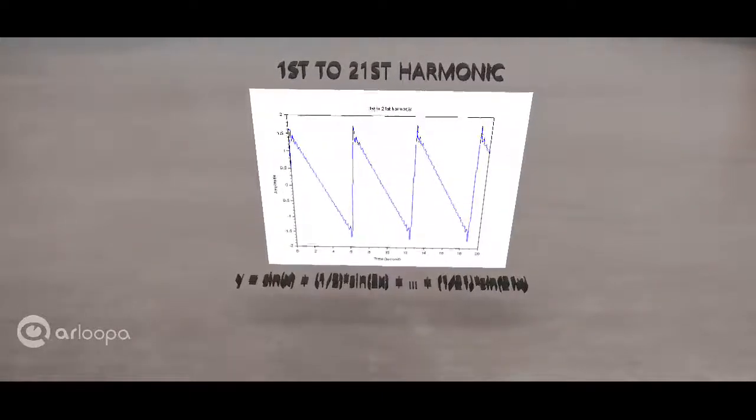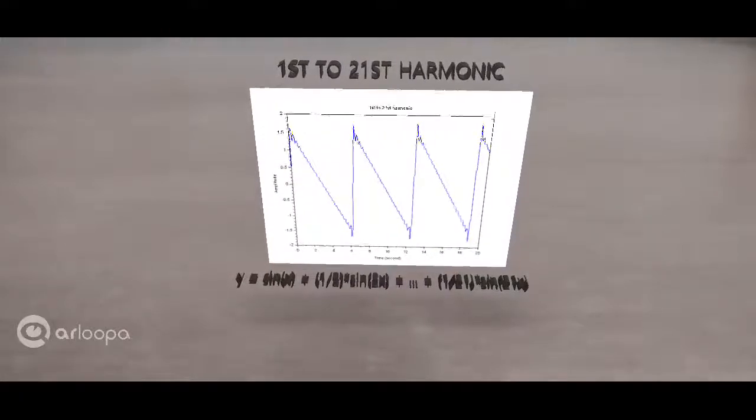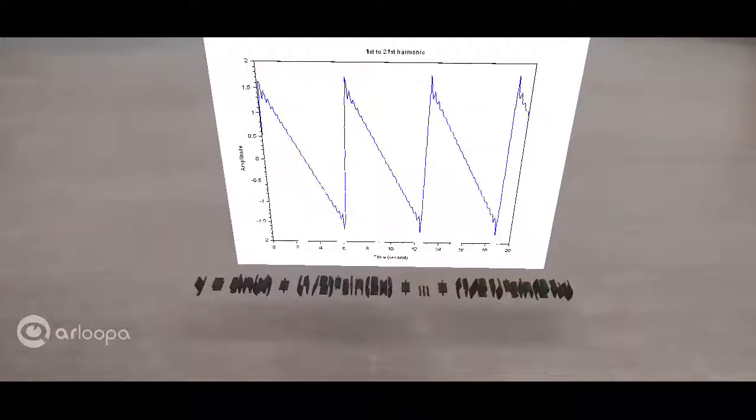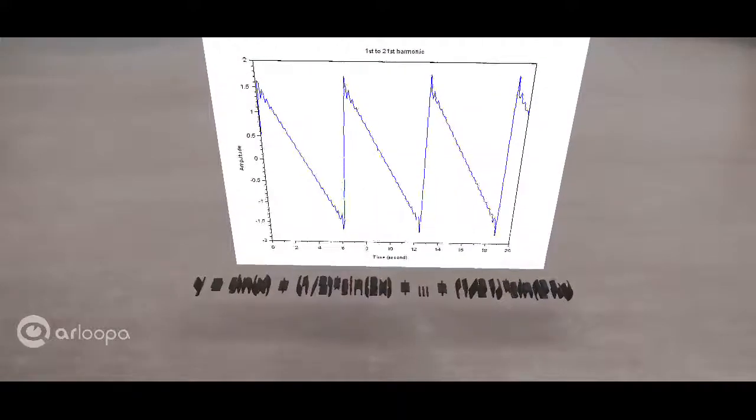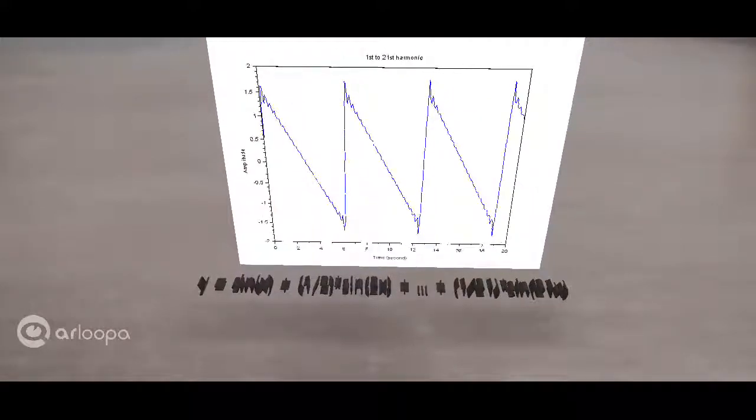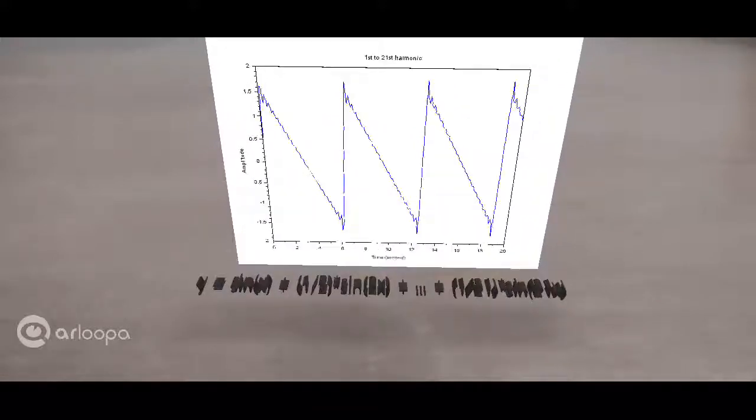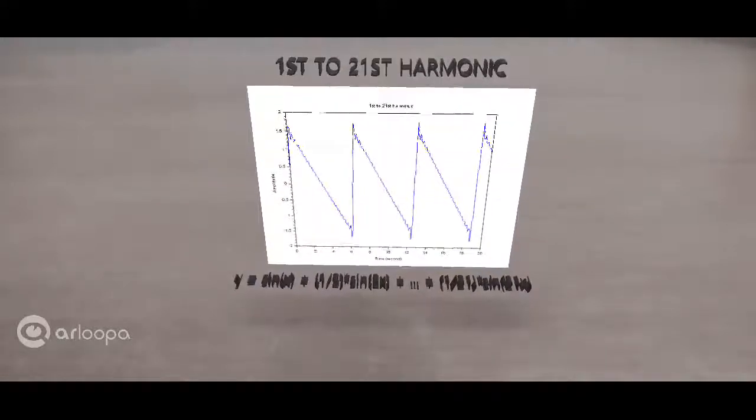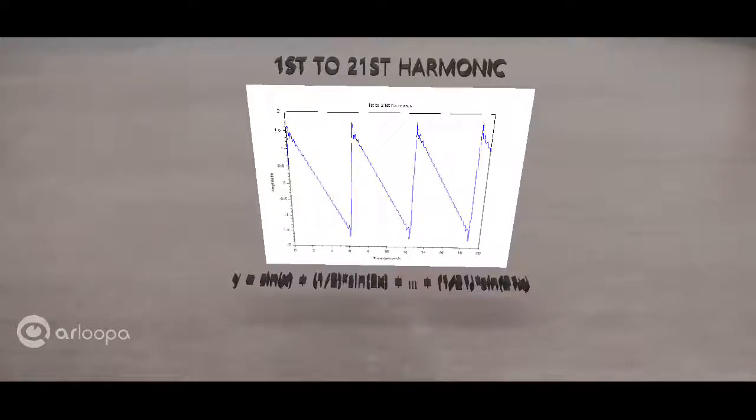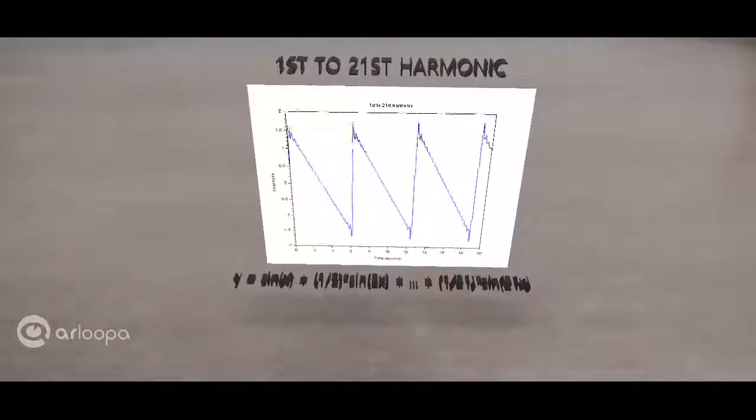Now we have added 20 harmonics after the fundamental and this is how the graph looks like. I'd say it pretty much looks like a regular sawtooth wave. All the curves that existed when we were adding the first, second and third harmonics have flattened out. It pretty much traces out a sawtooth wave and we can say it has achieved convergence on replicating a regular sawtooth wave.